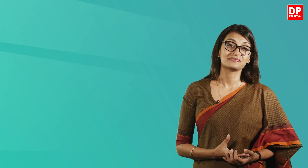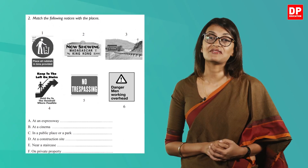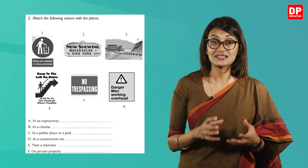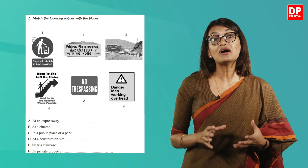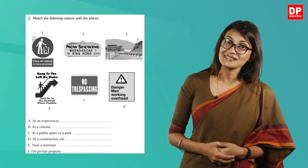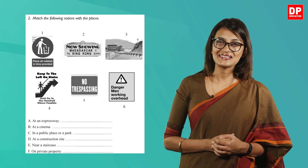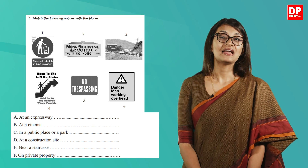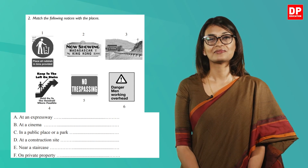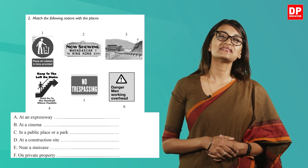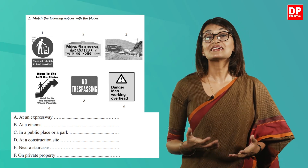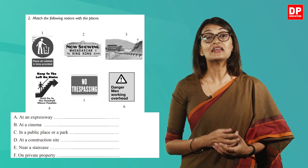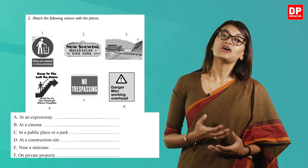Now let's look at another type of image that may come in your paper: signs. Let's take your workbook, Revision 1 on page 37, Question 2. You are given some signs in black and white and asked to match the notices with the places. The places listed are: A — at an expressway, B — at a cinema, C — in a public place or park, D — at a construction site, E — near a staircase, and F — on private property.